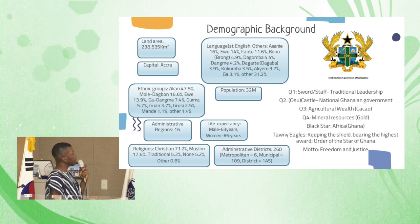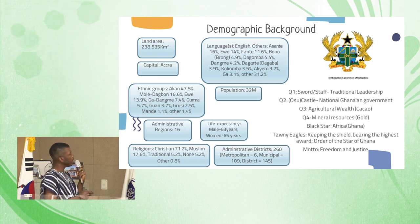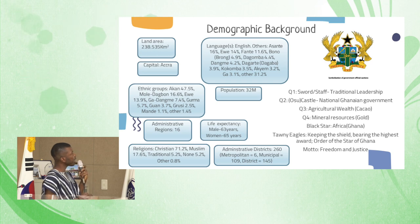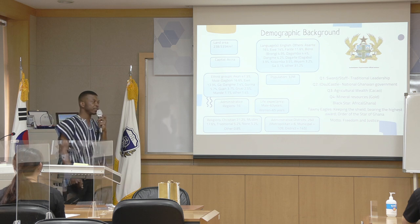We also have the turning eagles holding the shield. This award represents the Order of the Star of Ghana. If someone receives this particular award, he is deemed the most important person in Ghana.